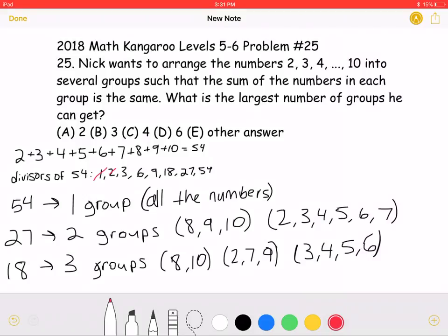1, 2, 3, 6, and 9 must be eliminated because the number 10 has to be in one of the groups, so the sum of the numbers in that group must be larger than 10. The remaining divisors are 18, 27, and 54.